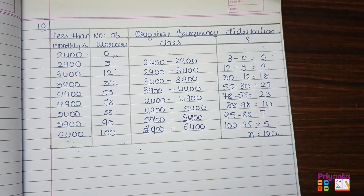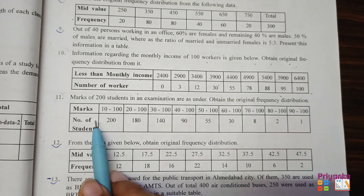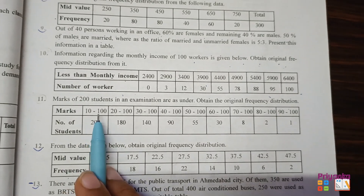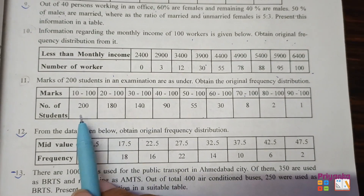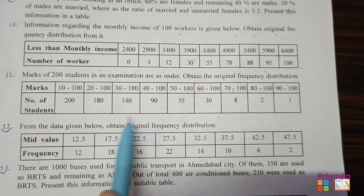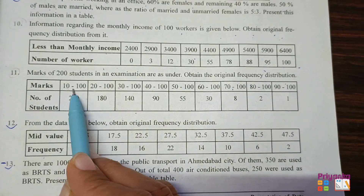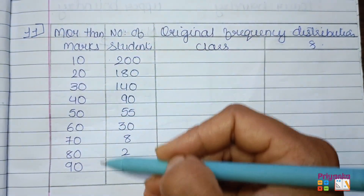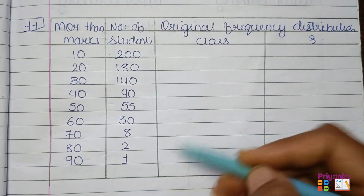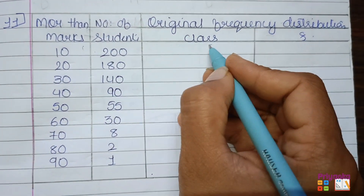Question number 11: Marks of 200 students in an examination are given — obtain the original frequency distribution. The classes are given with number of students (frequency). Since the values keep on reducing, the information is given from the more-than cumulative frequency. Write only the first number from the marks to take the value of more-than, then record the number of students as given.